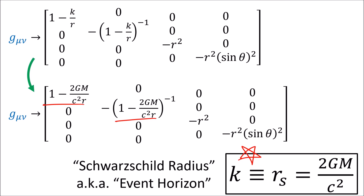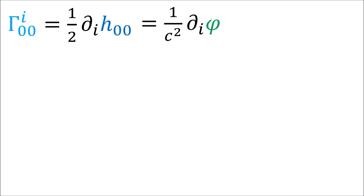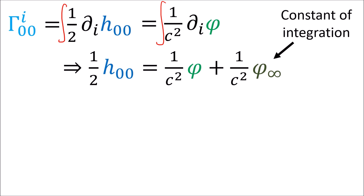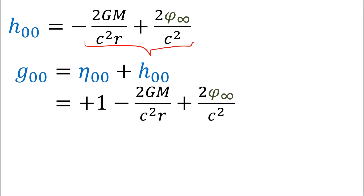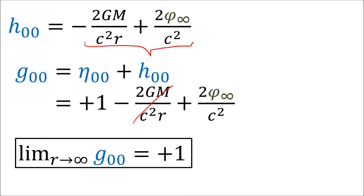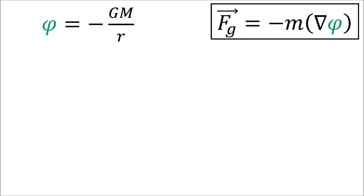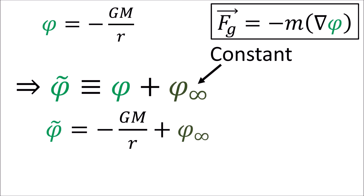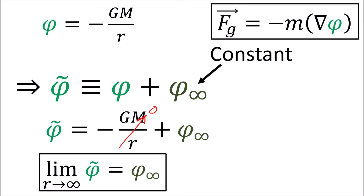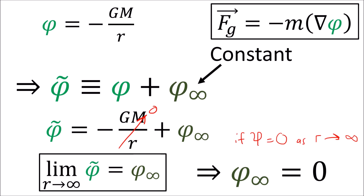This completes the derivation of the Schwarzschild metric. Note that cancelling derivatives on both sides technically requires integration, which introduces an additional constant of integration. But since we want the metric to reduce to the flat Minkowski metric as r goes to infinity, we're forced to set this constant to zero — analogous to how the Newtonian gravitational potential must be zero infinitely far from the mass.